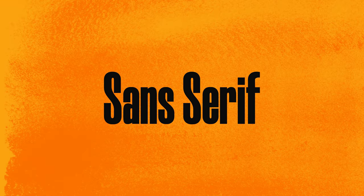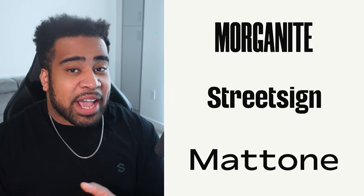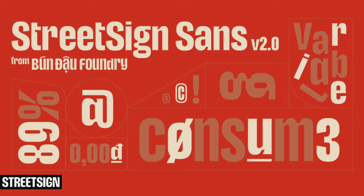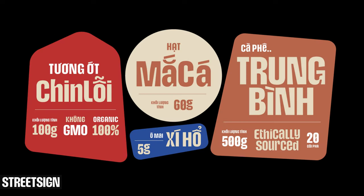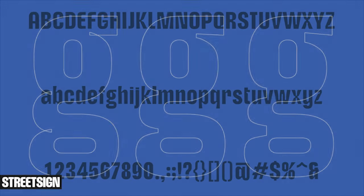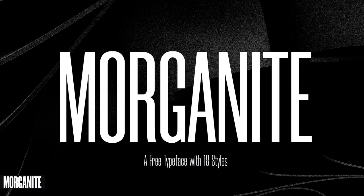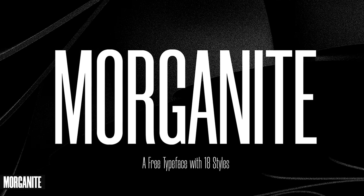For my sans serif groupings, we have some of my favorites ever: Street Sign, Morganite, and Matte Tone, just to name a few. Street Sign actually comes in a few different heights and ink trap variations, which makes wherever this font lands super legible. With the character the typeface already holds, adding a full Latin glyph set is actually amazing.